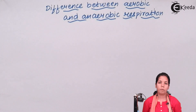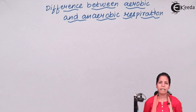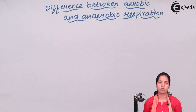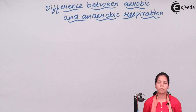If I talk about aerobic respiration, it needs a large amount of oxygen to take place. When I talk about anaerobic respiration, it doesn't need oxygen — it takes place in the absence of oxygen. No oxygen has to be present in anaerobic respiration.